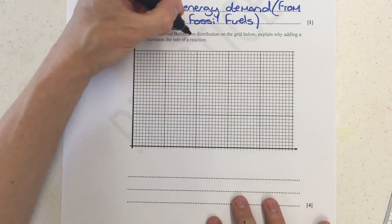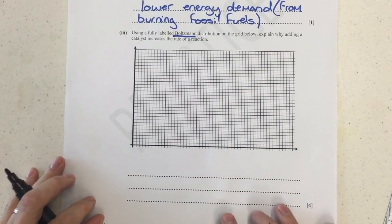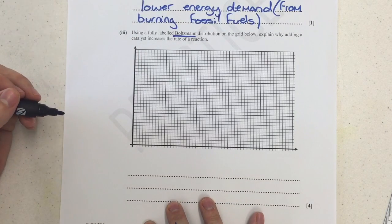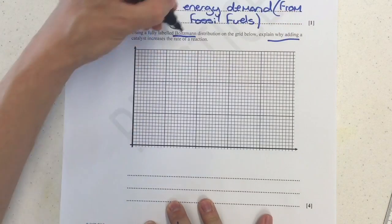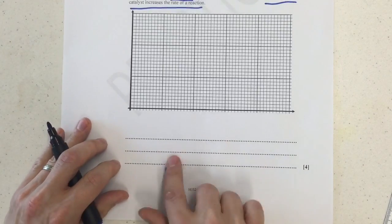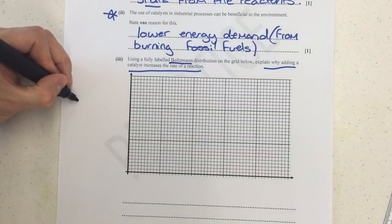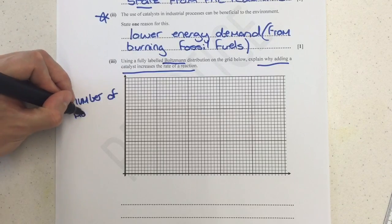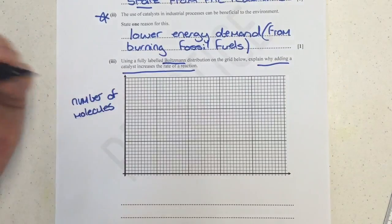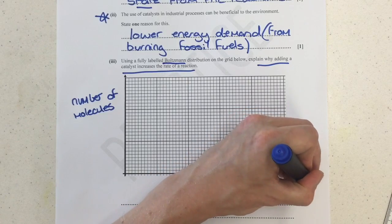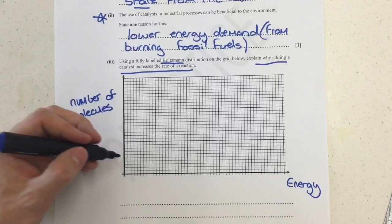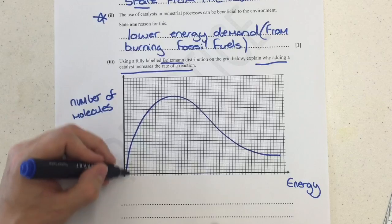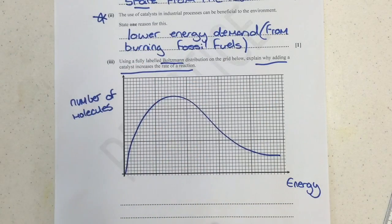Next one is our Boltzmann distribution. So you can see for OCR it is just Boltzmann. Don't worry about it though. For this one, what we've got is to label our axis and to draw the Boltzmann distribution curve on here. Then we need to explain why adding a catalyst increases the rate of reaction. Labeling up our axis, we've got number of molecules and we've also got down here energy. The Maxwell Boltzmann distribution curve looks exactly the same as the Boltzmann distribution curve. Nice gradual curve up, never touching the x-axis on this side.